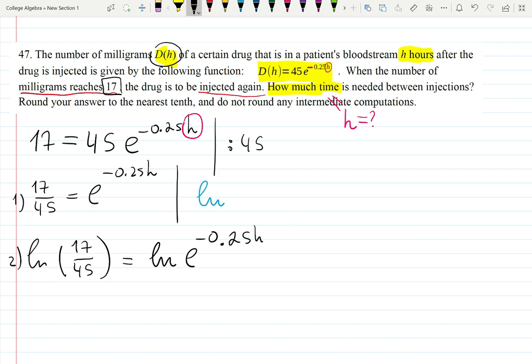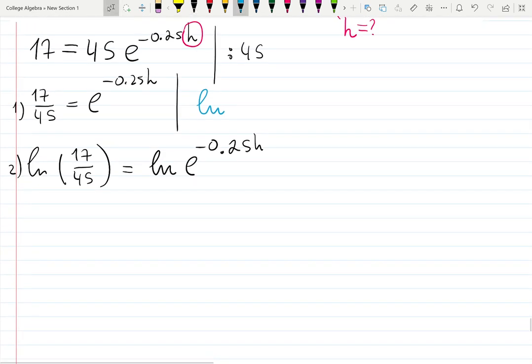Natural log of 17 over 45 equals log—and okay, I will write down and then I will tell you. Log will undo the exponential function, so that's very convenient. That's very convenient, like so. And we did not have this luxury in the previous problem, so that's very good to have it.